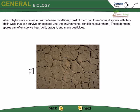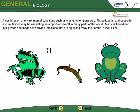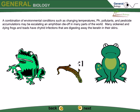Chytrids and their zoospores are really important in fungi ecology. A combination of environmental conditions such as changing temperature, pH, pollution, and pesticide accumulation may be why amphibians die off in many parts of the world. Many sick and dying frogs and toads show chytrid interactions that are digesting away the keratin in their skins.